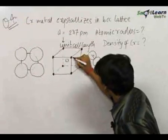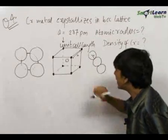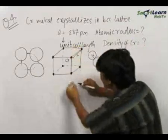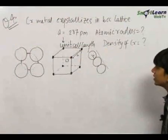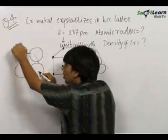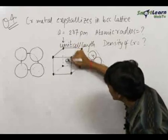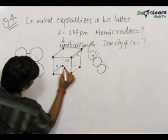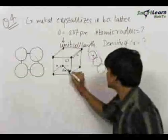To find the unit cell length, we visualize that the atoms are touching along the body diagonal. This atom, this atom, and the atom below are touching each other diagonally. So we need to find the length of the diagonal of this cube. The sides of the cube are each labeled as length a.